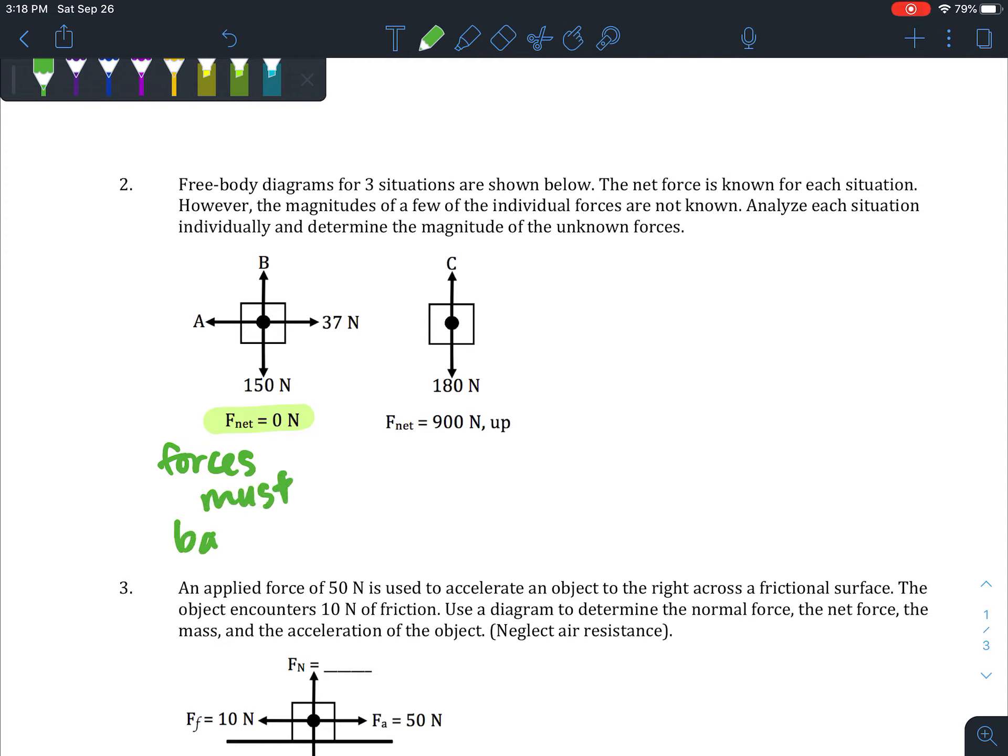That's the only way that F_net can be zero. So if we have 150 newtons down, we must have 150 newtons up to balance that. And if we have 37 newtons to the right, we must have 37 newtons to the left to balance it.